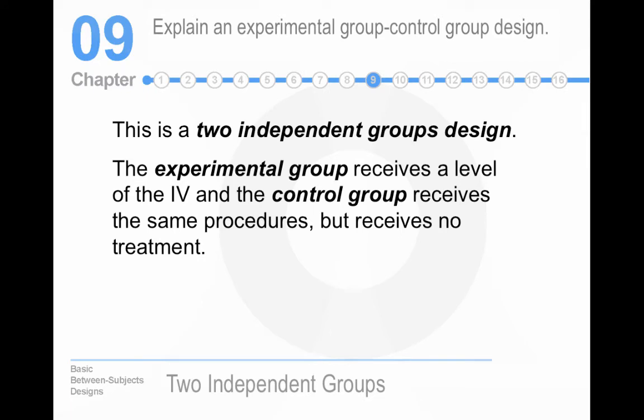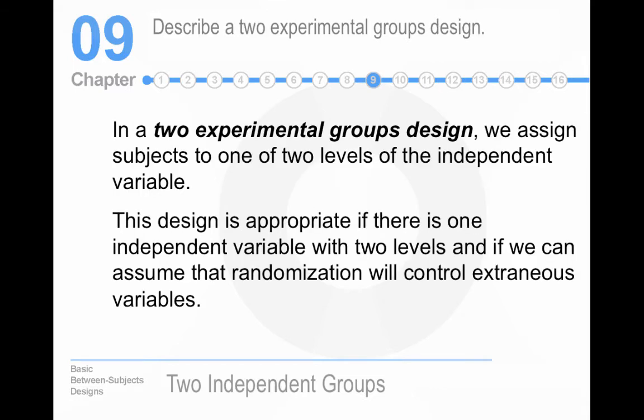A two independent groups design, the experimental, this is, yes, by definition this is correct. The two experimental groups design, you assign to one of two levels. It talks about this randomization issue. We can usually assume group equivalence with random assignment, at least we act like we can. So we use it to cure a lot of ills, this idea of random assignment. It works poorly with only five to ten people per condition.